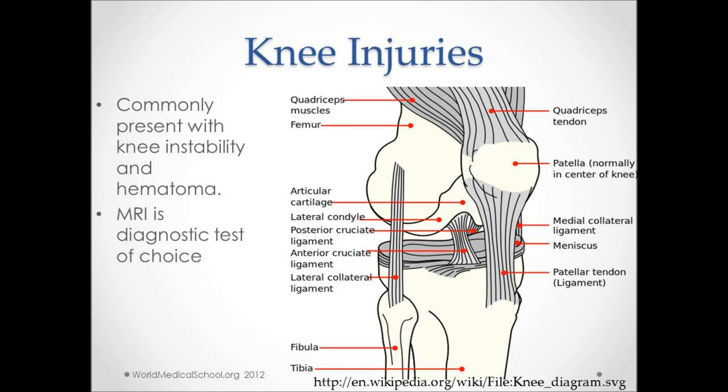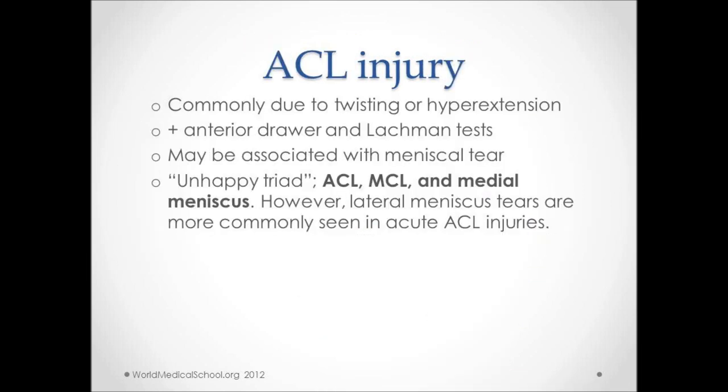Some knee injuries that are commonly tested we'll discuss now. Most of these commonly present with knee instability and a hematoma. MRI is the best diagnostic test as we can see all the different ligaments as well as the menisci. The first injury is an ACL injury, commonly due to twisting and/or hyperextension. Anterior drawer sign and Lachman tests are positive.